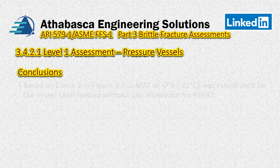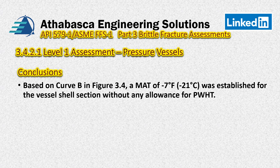So let's look at our conclusions. Based on Curve B selected from the materials tables for our given material, and using Figure 3.4 and Figure 3.4M for metric, we determine a MAT of minus 7 degrees Fahrenheit, equivalent to minus 21 degrees Celsius. This was established for the shell section based on the governing thickness, with no allowance taken for post-weld heat treatment, as none was performed in this example. That concludes this example.